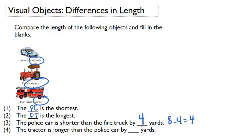Tractor and police car: the tractor is 6 yards, the police car is 4 yards. So 6 minus 4 is 2 yards.